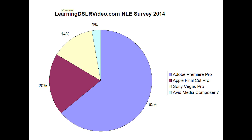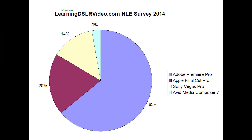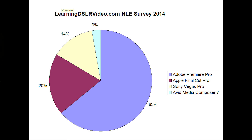Let's go through the breakdown. We've got Premiere Pro at 63 percent, Final Cut Pro at 20 percent, Sony Vegas Pro at 14 percent, and Avid Media Composer at 3 percent. I've lumped all the pro packages together because there were lots of different versions, and I wanted to first look at the breakdown in terms of the software manufacturers.